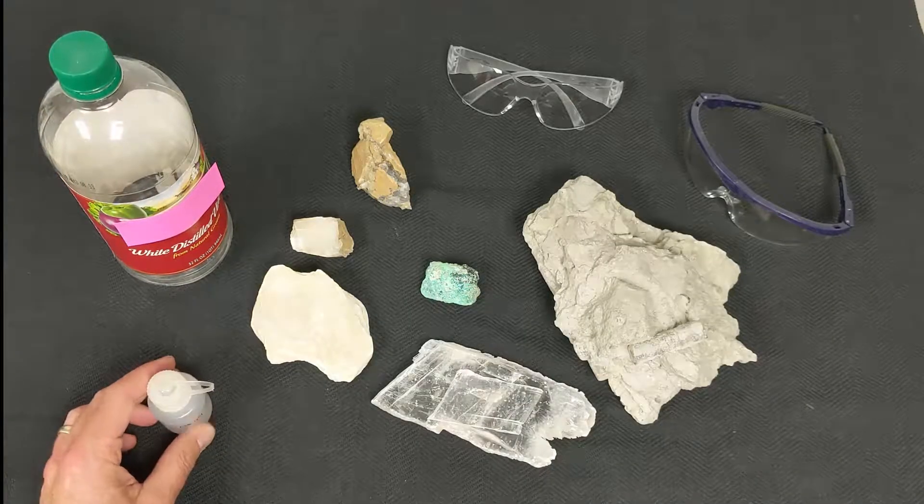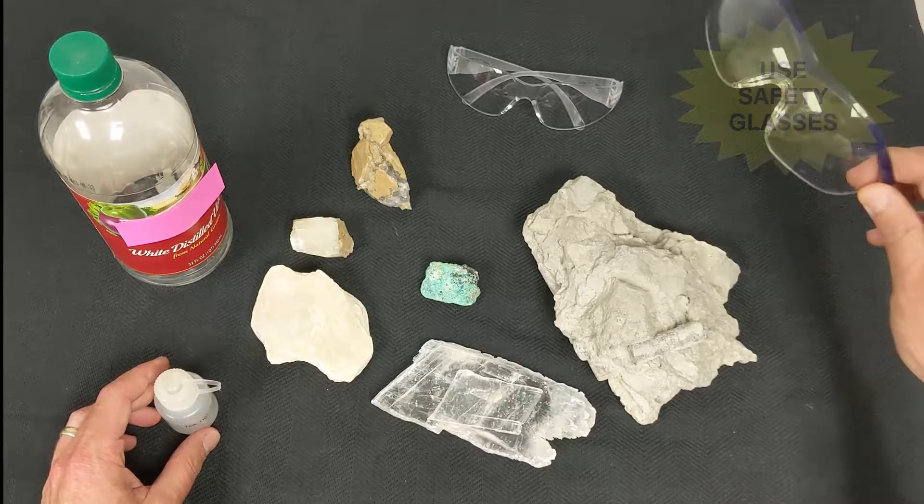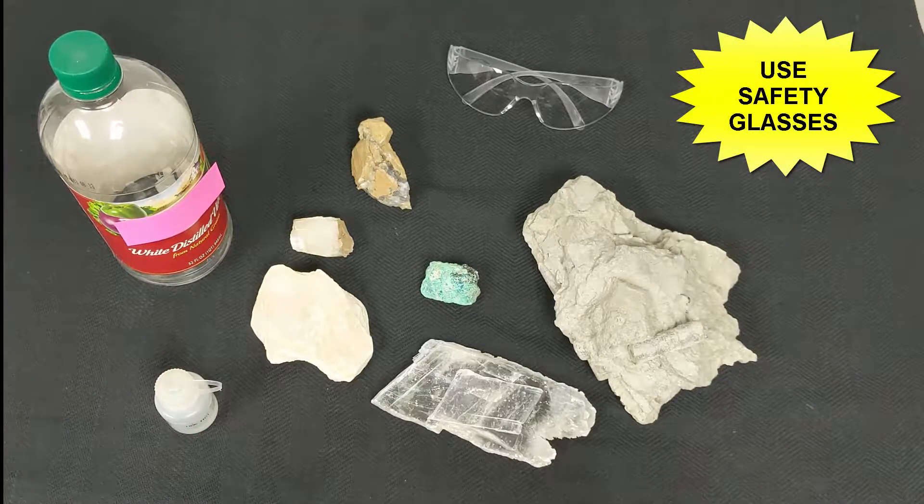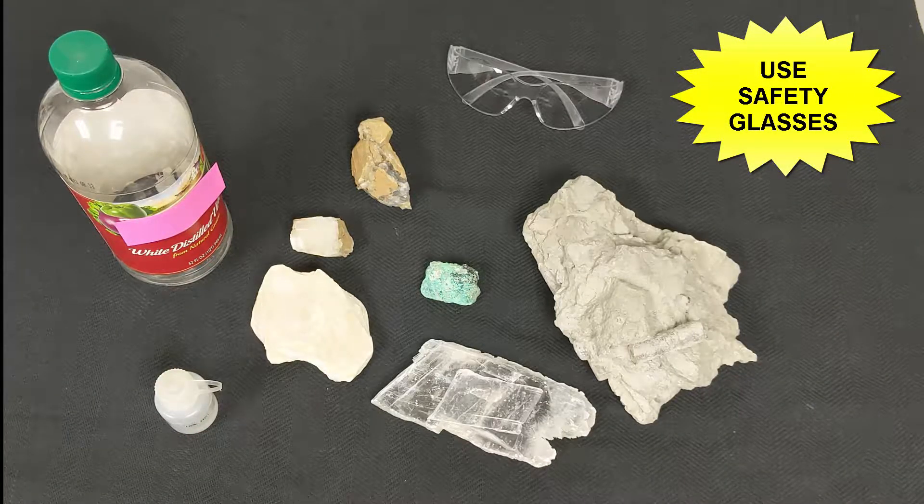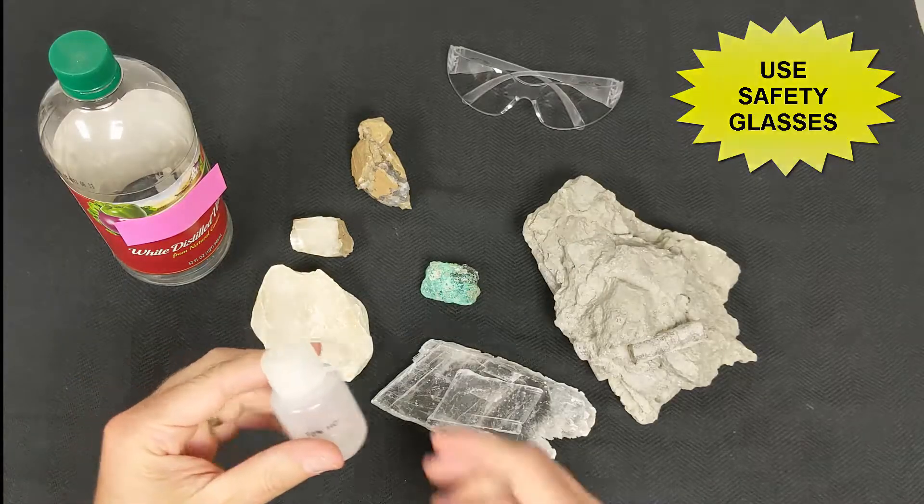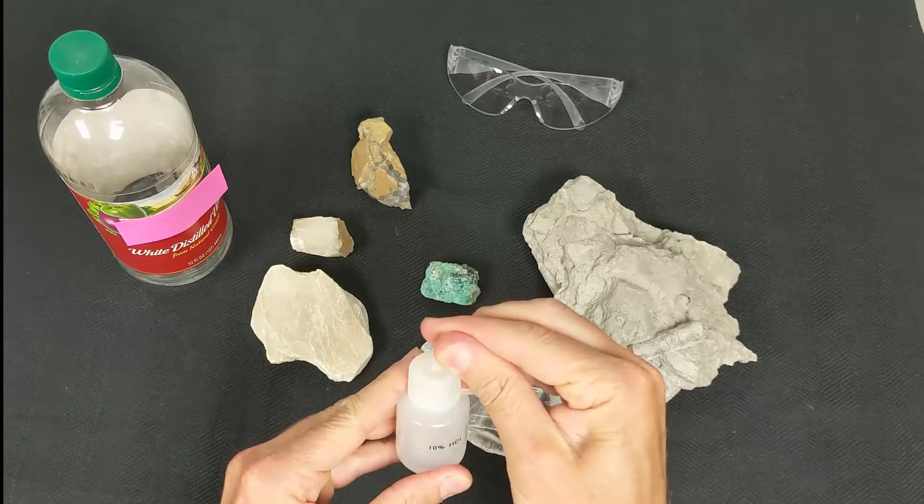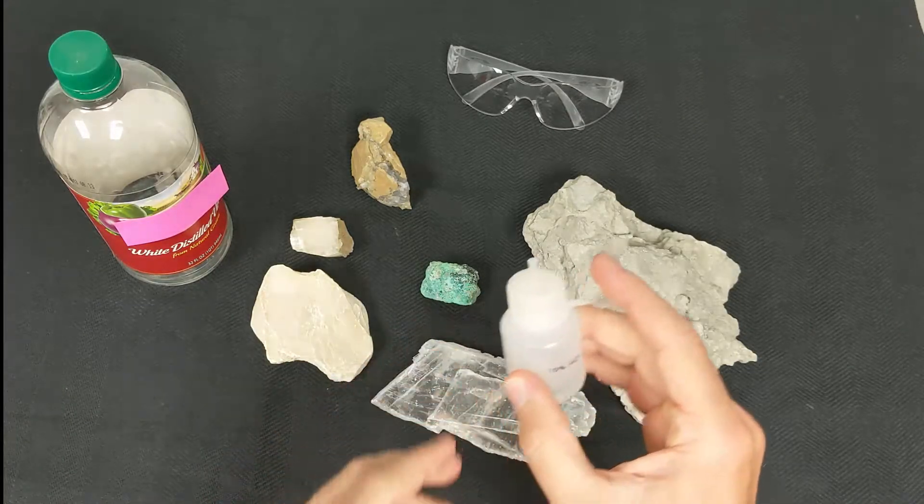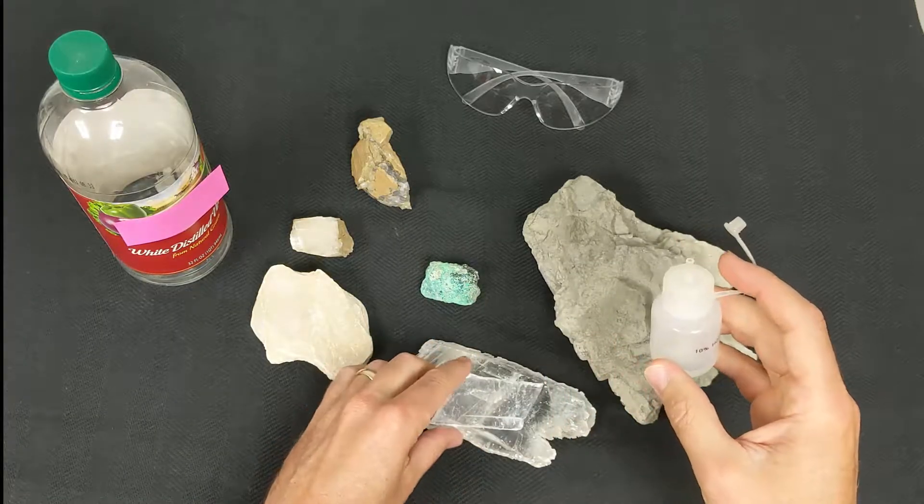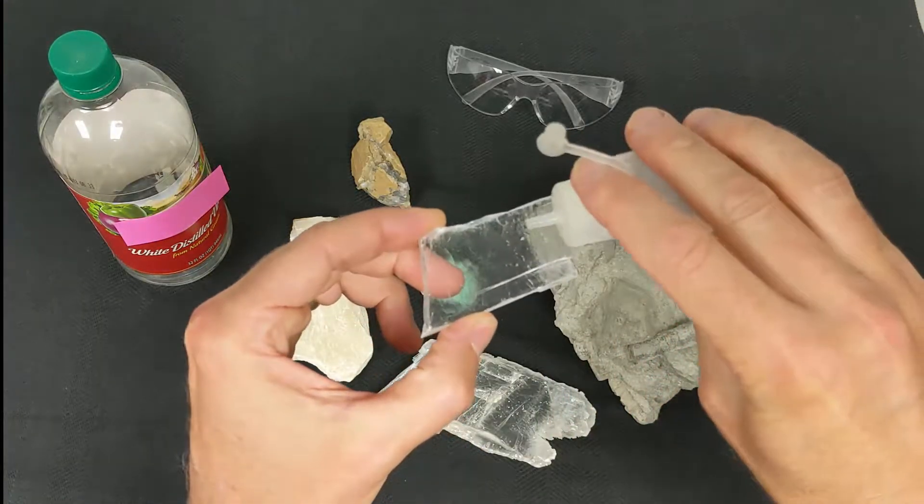So in order to do the acid test, it's a really good idea to use your safety glasses. So we'll put safety glasses on. And then what we'll simply do is put one droplet of the acid on a mineral sample. So let's take a look at what we have here.